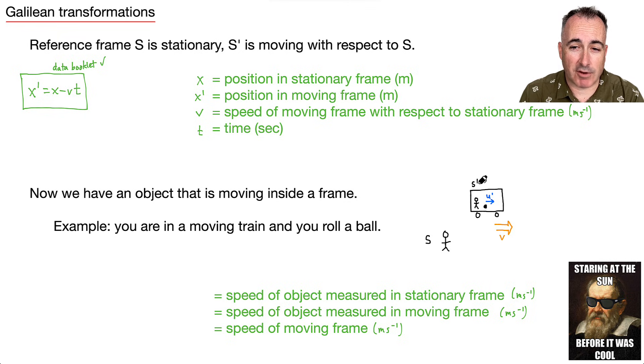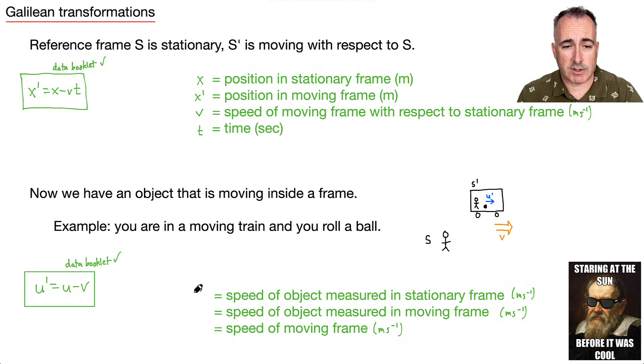S prime is going to be the frame of reference of someone sitting inside that train and inside that train, keep in mind that person rolls a ball. And so they're going to measure that speed here. We're going to call it U prime because it's in the reference frame of the moving train. And we're going to say that V is actually the speed of the train compared to this S person. So we're going to have U primed equals just U minus V. And then this one also in your data booklet. And let's define our variables.